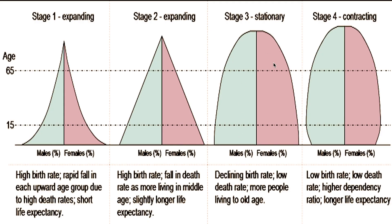Stage three shows declining birth rates, low death rates, and more people living to old age. This means there is high life expectancy — people live long before they die. Then stage four is the contracting stage, where the bottom becomes narrower.